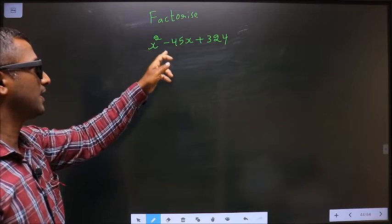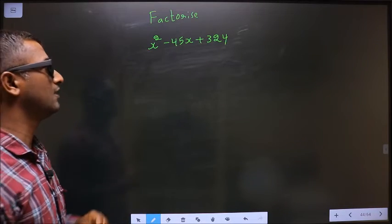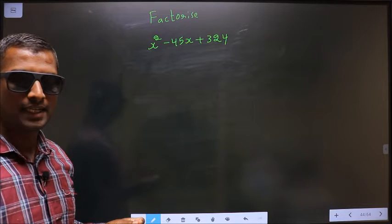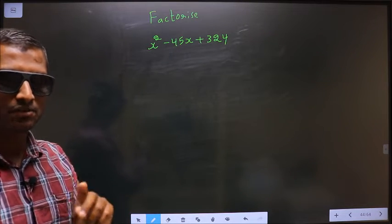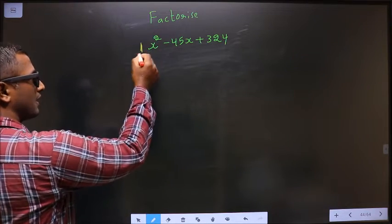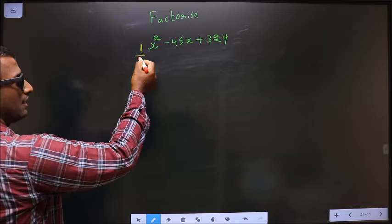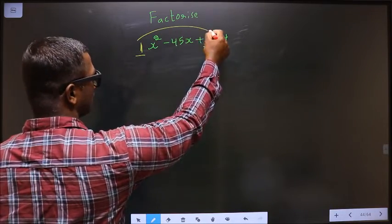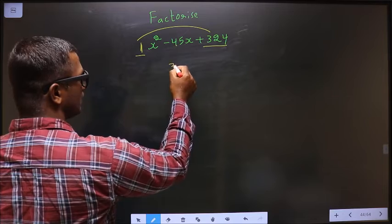Factorize x square minus 45x plus 324. So whenever you factorize a quadratic equation, step 1: whatever is the coefficient of x square, here in this case 1, you should multiply it with the constant. So 1 into 324 is 324.